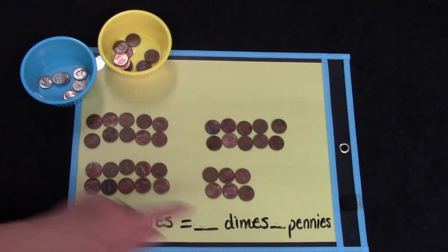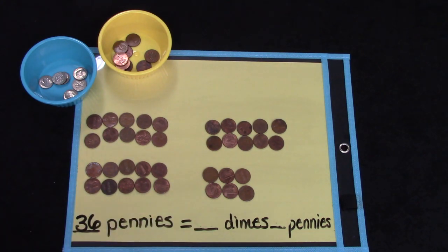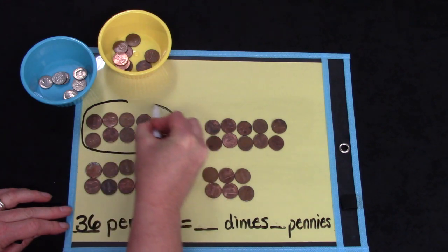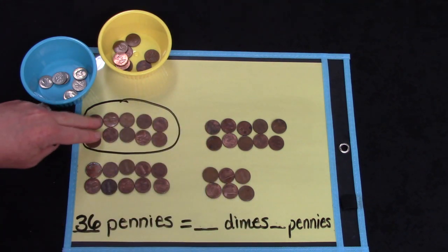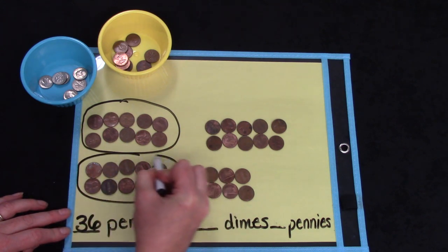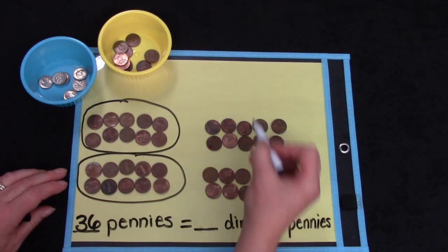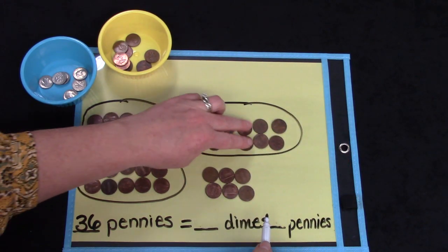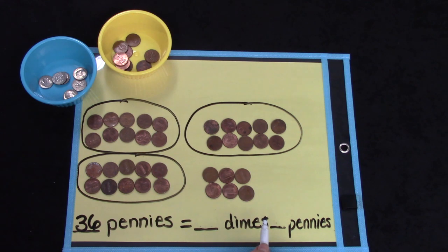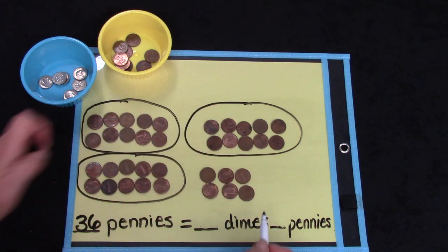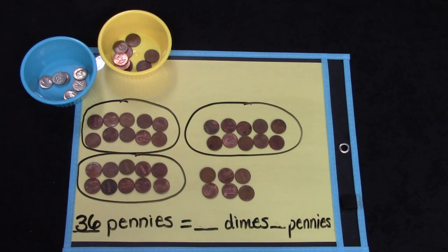Hmm, how many times would that be? Did you notice that I put my pennies in groups? One group: 2, 4, 6, 8, 10. Here's another group: 2, 4, 6, 8, 10. Here's another group: 2, 4, 6, 8, 10. Hmm, and then I have 2, 4, 6. Oh dear, not enough to trade for a dime.